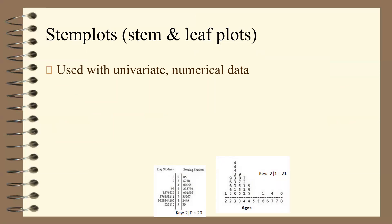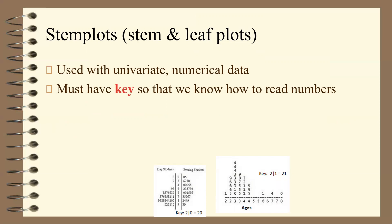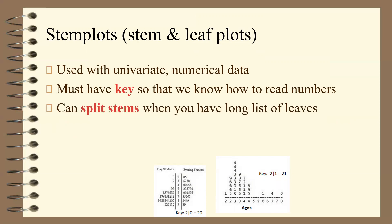Stem plots are used with univariate numerical data. They must have a key so that we know how to read the numbers. You can split stems when you have a long list of numbers. For a comparative stem plot, you start reading from the stem in the middle — so for evening students, you'd read 20 and 25; for day students, start with the stem again to get 28, 32, etc. Always include a key — for example, '2 | 0 = 20' — because sometimes it could represent a decimal. Always include a title indicating what the numbers represent, such as ages. If you are doing a comparative stem plot, you should have two titles.